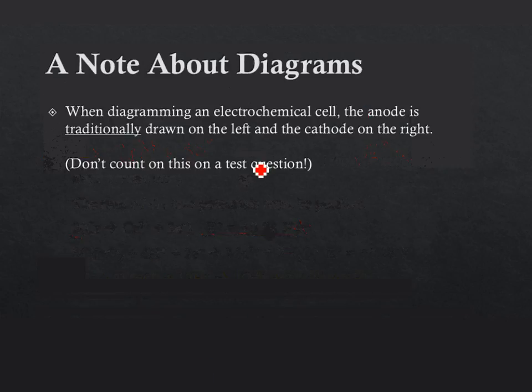When diagramming electrochemical cells, the anode is normally drawn on the left, pardon me, and the cathode on the right. So you'll see your beakers, and this is the traditional way, the anode and then the cathode. But this is not always the way things are going to be on standardized tests. And on my test, we'll be giving you a cell. You'll have to determine the orientation and the nature of the cell itself.